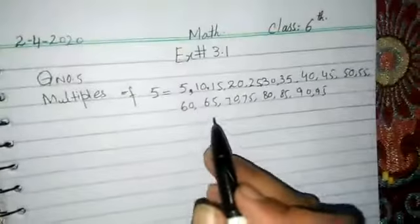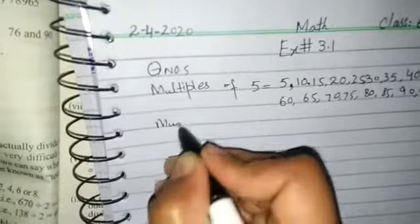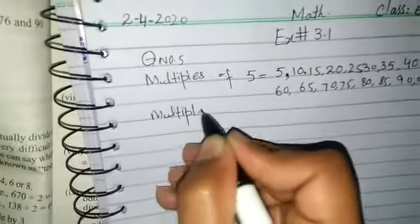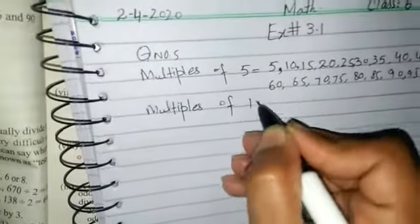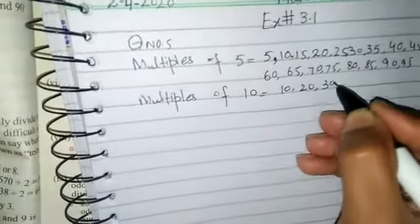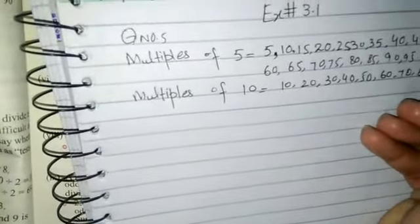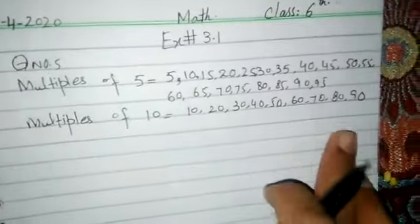Multiples of 10 less than 100: 10, 20, 30, 40, 50, 60, 70, 80, 90.